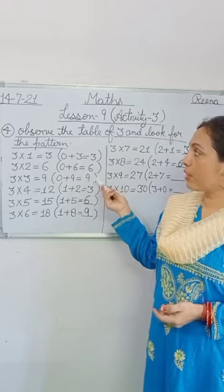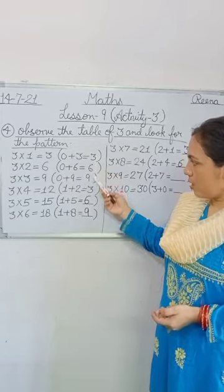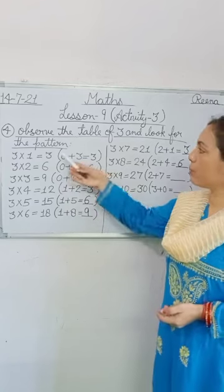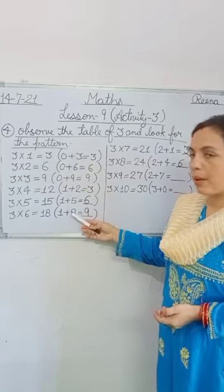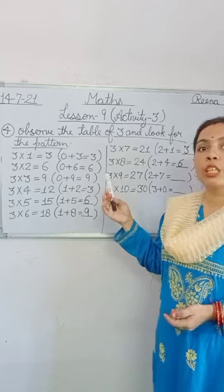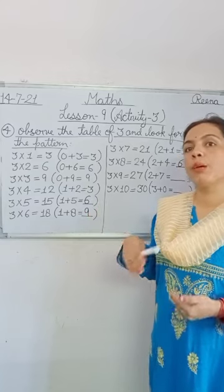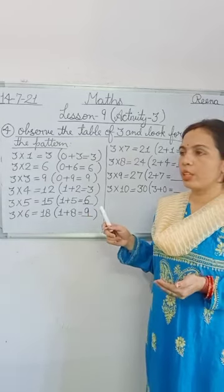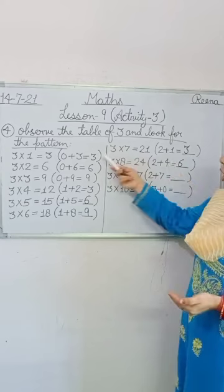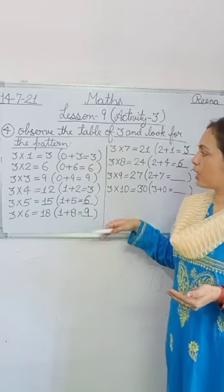We observe that the sum of the digits of all products follows a pattern: the digit sums cycle as 3, 6, 9, 3, 6, 9 — that means all the products in the table of 3 are divisible by 3, and the sum of their digits is also always divisible by 3.